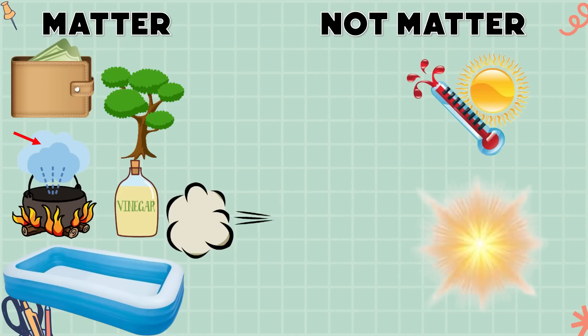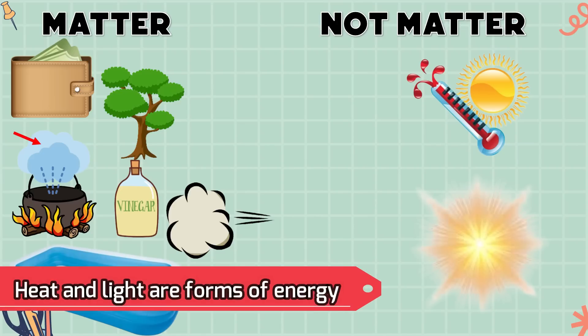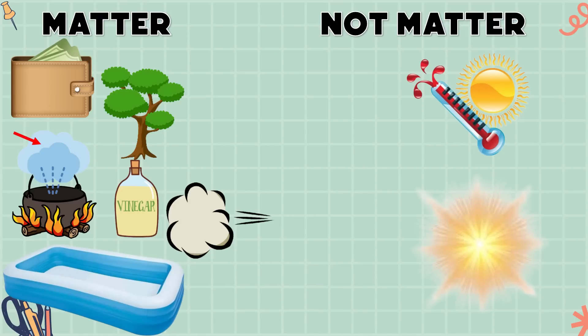Based on this activity, we can say that all our answers in the matter column can be measured. Lahat sila ay maaaring masukat. Bakit? Because matter occupies space and has mass. Paano naman ang heat at light? Do they occupy space? The answer is no. They do not occupy space and don't have mass. Sa makatawid, hindi sila matatawag na matter. Heat and light are forms of energy. And in chemistry, energy is not a matter.